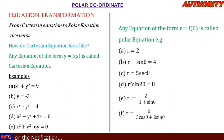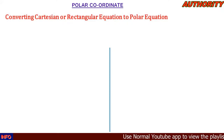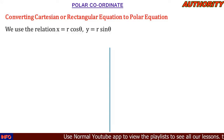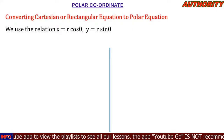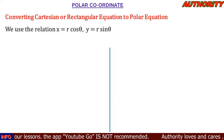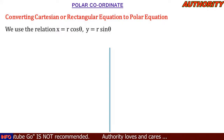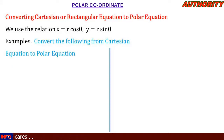Now let's properly convert Cartesian (rectangular) equations to polar equations. We will use the relations: anywhere we see x, replace it with r·cosθ, and anywhere we see y, replace it with r·sinθ. So x = r·cosθ and y = r·sinθ.